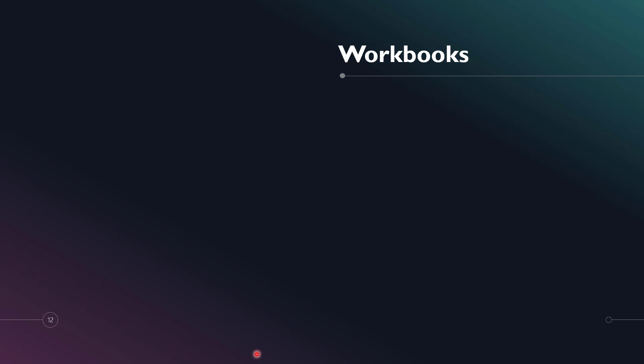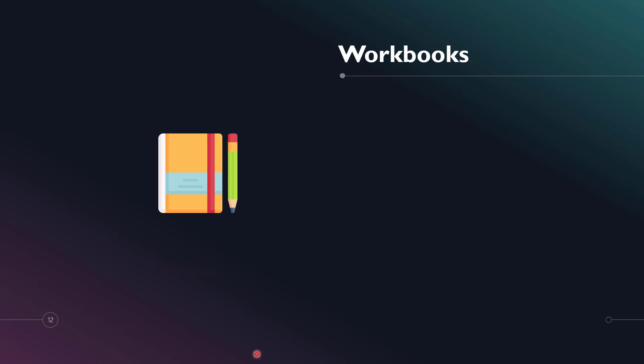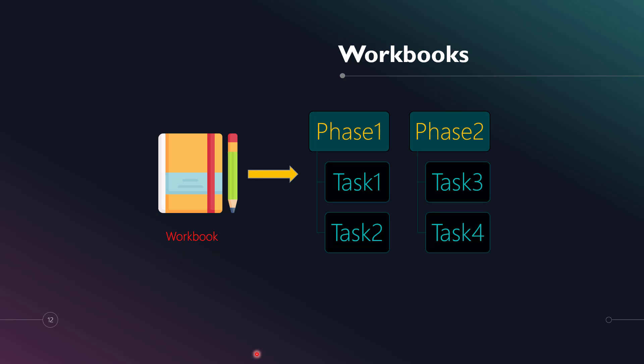Splunk Phantom also has a concept of workbooks. Workbooks can be thought of as defined sets of tasks. If your analyst needs to perform a defined set of tasks for a particular security event, you can automate those using workbooks. Workbooks have phases that can be interdependent — you can check conditions and branch to other phases — and each phase has a set of tasks, including calling a playbook.